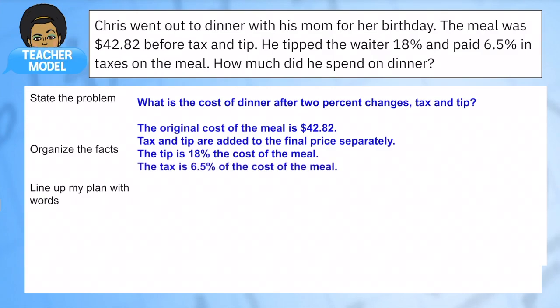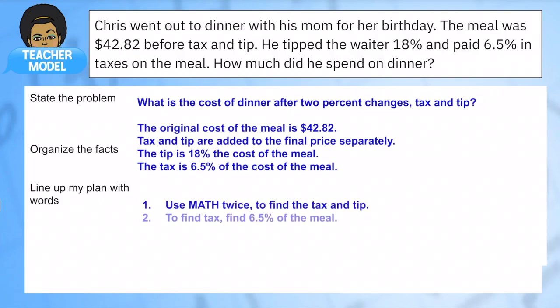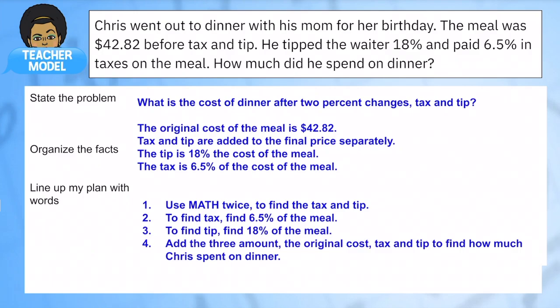In this case, we're going to figure out the tax and tip separately — that is how it's done in restaurants. When you calculate the tip, you look at how much the food costs and make your tip based on that. If you're giving a 15% tip, it's 15% of that meal. The tax is also based on the meal. We're going to use math twice: 6.5% for the tax and 18% for the tip — I don't want to add tax and tip together in one step here because that would cause errors. We'll find the change for each, then add all three amounts together.